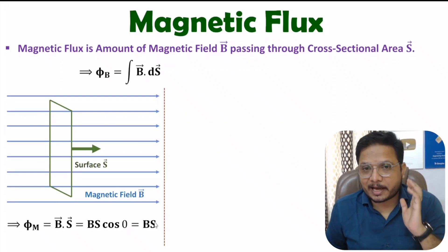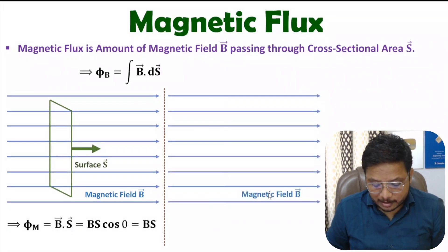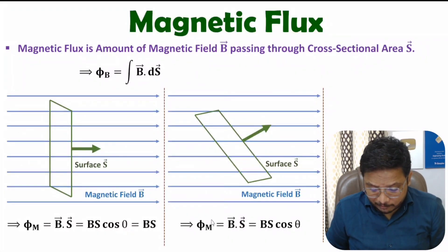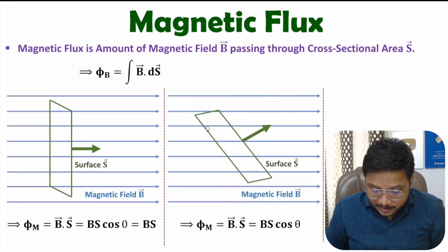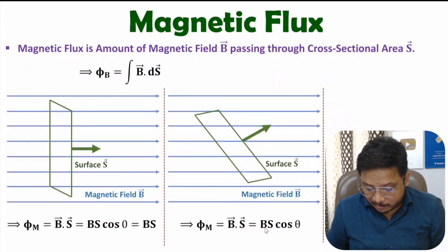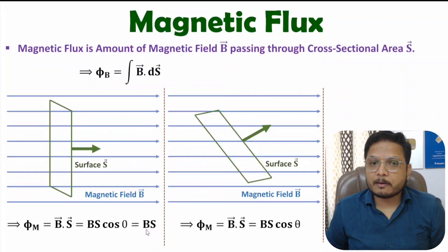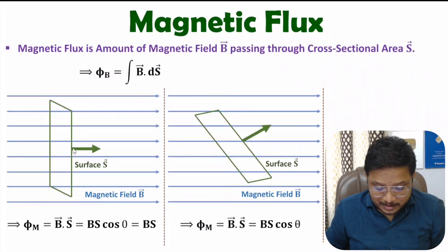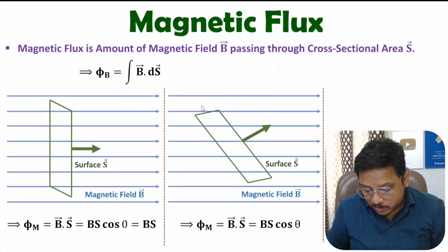But what if you incline the area? Here we have the magnetic field, and now the surface is having some inclination. The direction of the surface is at angle θ from the direction of the magnetic field. In that case, magnetic flux is B·S·cosθ. You can observe that because the surface is inclined, the magnetic flux is decreasing. When the surface and magnetic field were in the same direction, angle was zero and magnetic flux was maximum. As inclination increases, the amount of magnetic field passing through the surface decreases.